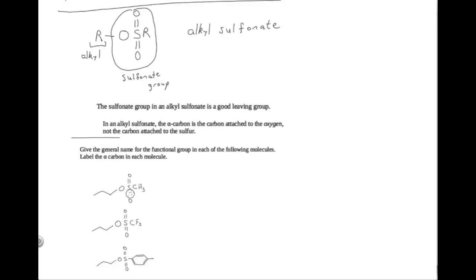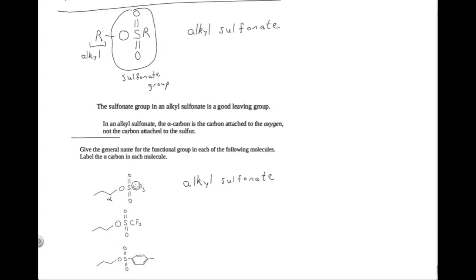Let's try this exercise. Take a look at this molecule and give the general name for its functional group. This molecule matches the alkyl sulfonate pattern, so the general name is alkyl sulfonate. Now label the alpha carbon: in an alkyl sulfonate, the alpha carbon is the carbon attached to the oxygen, not the carbon attached to the sulfur. This carbon attached to the oxygen is the alpha carbon; the one attached to the sulfur is part of the sulfonate group.